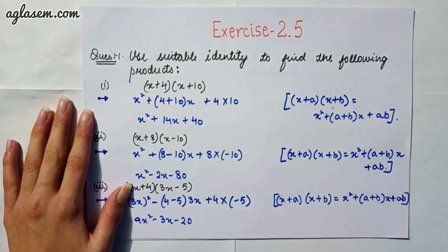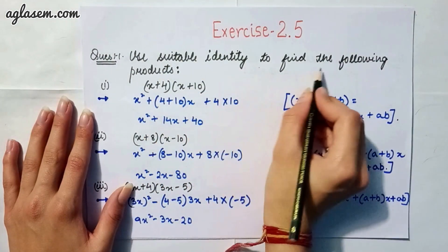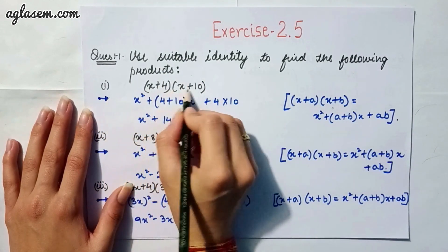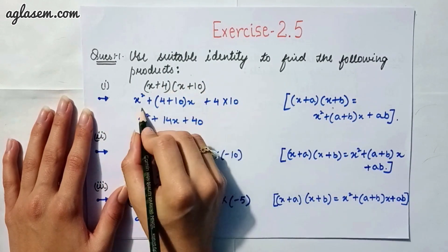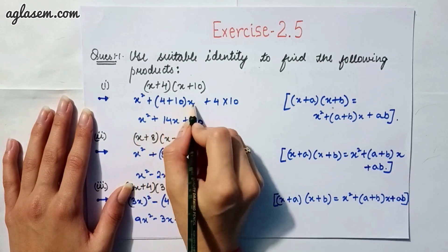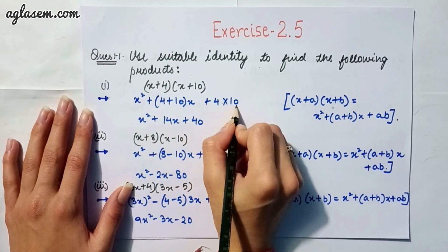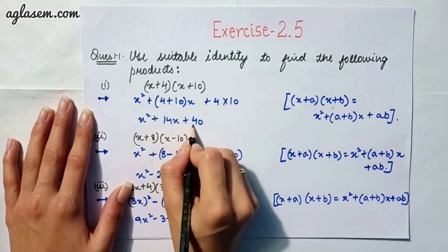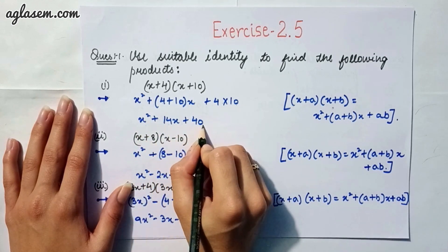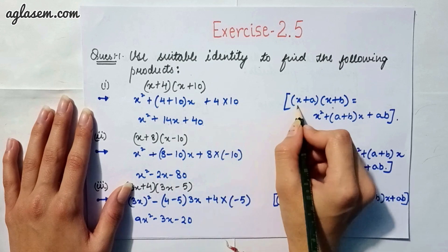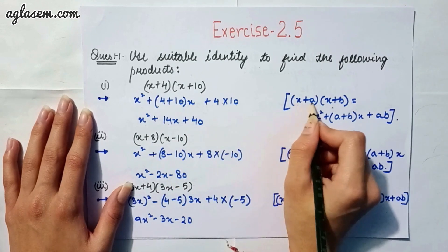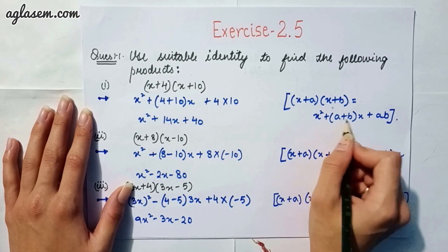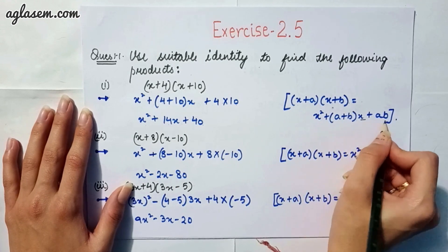Our first question says: use suitable identity to find the following products. Part 1 says (x + 4)(x + 10). So x² + (4 + 10)x + 4×10, which gives x² + 14x + 40. We have used the identity (x + a)(x + b) = x² + (a + b)x + ab.